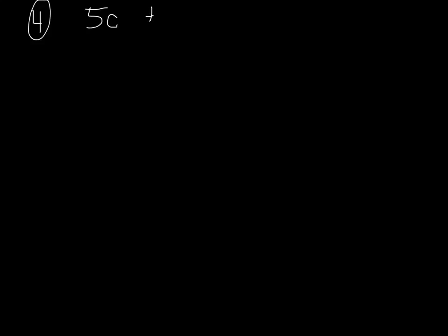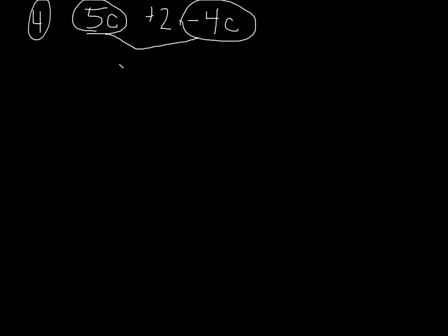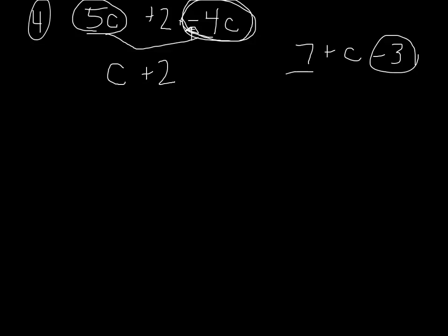If I have 5c plus 2 minus 4c, I have my 5c and my minus 4c. I'm not going to add — I have to subtract. So 5c minus 4c leaves me with 1c, or just c, plus 2. I have to make sure I'm looking at the operation in front of each term. Just like if I had 7 plus c minus 3, I would do 7 minus 3, giving me 4 plus c.